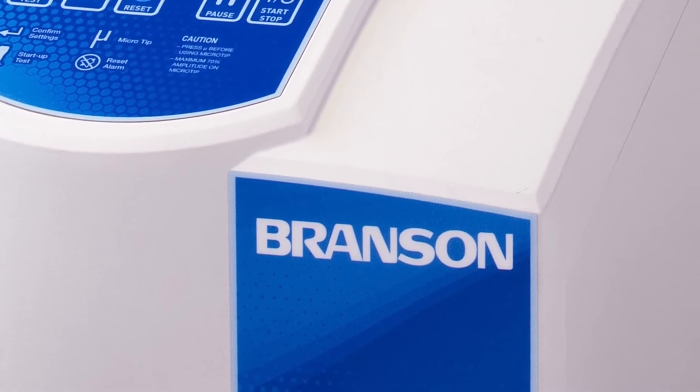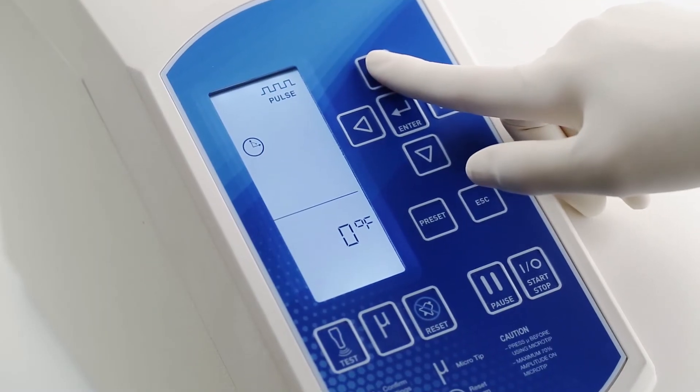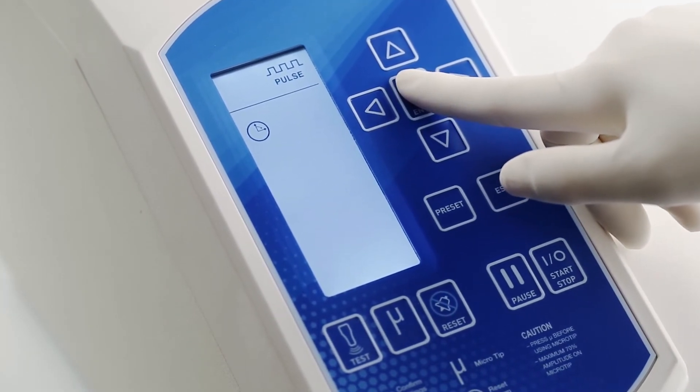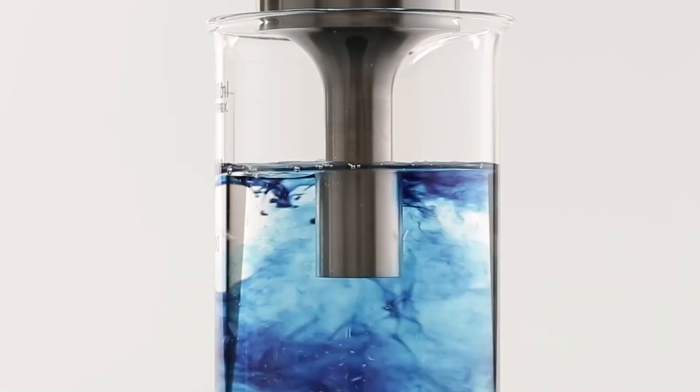And you can specify a temperature range for processing your sample. Once the lower temperature limit is reached, Branson's True Temperature Control automatically modulates the pulse to prevent the sample from exceeding the maximum limit. True Temperature Control is another exclusive Branson feature to ensure consistent, predictable results.